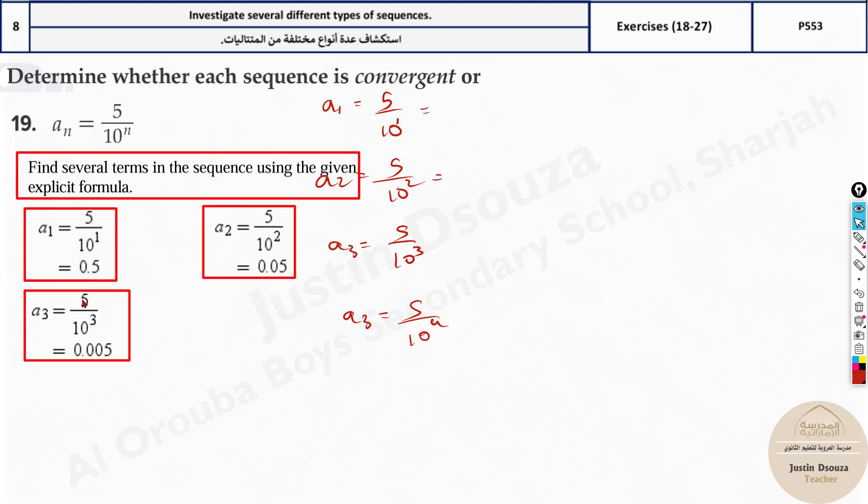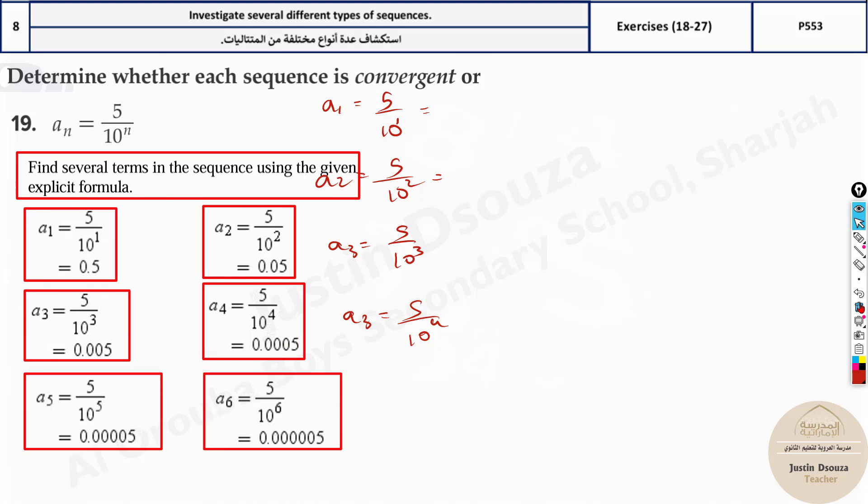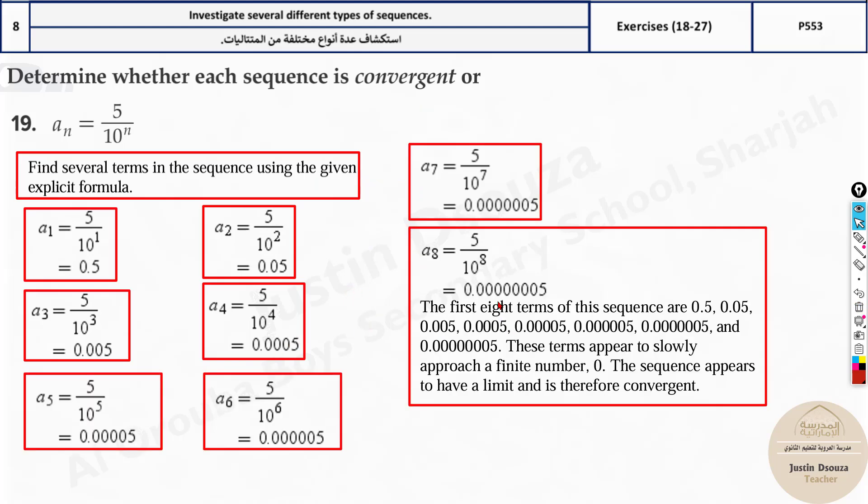You can see it's 5 by 10, 0.5, now 0.05, keeps going. This is by 10,000, so you'll have three zeros then 5. What is happening? If you keep on increasing the values, it's going towards extremely close to zero. So they are all converging. The values are converging towards zero. No matter what, all the values are going towards zero. Therefore, this is a convergent series or sequence.